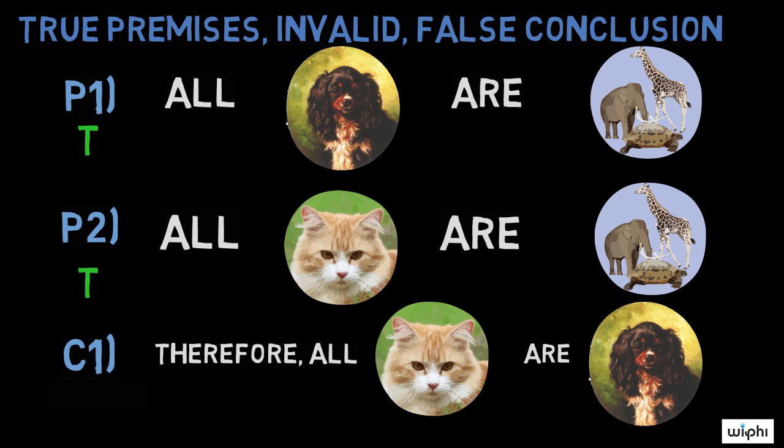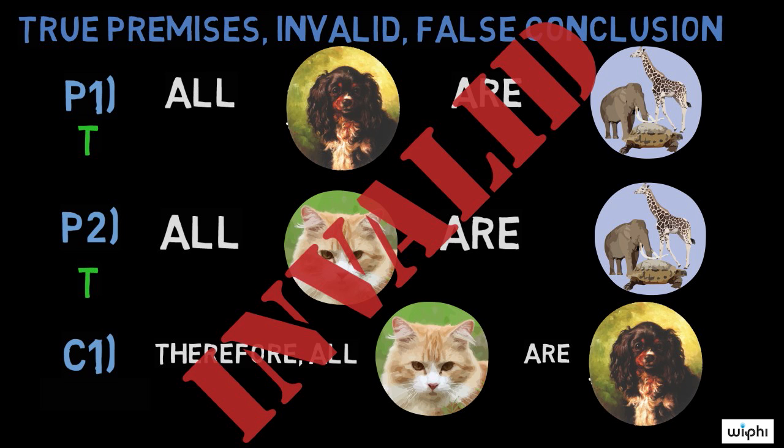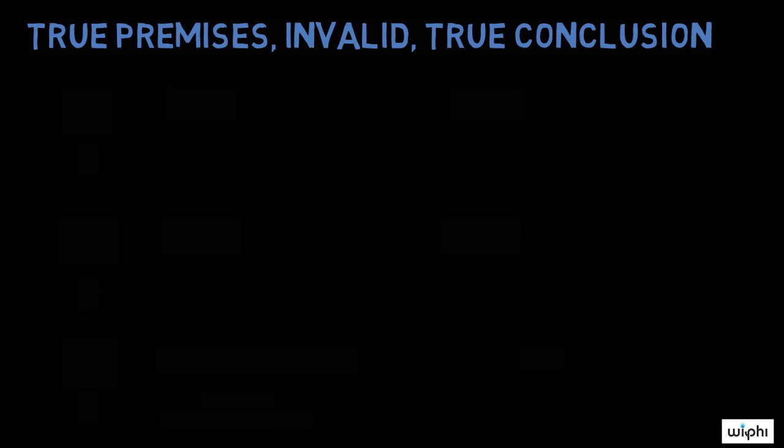Here, the premises are obviously true, but the conclusion does not follow logically from them. Of course, this argument is clearly unacceptable because its conclusion is obviously false.